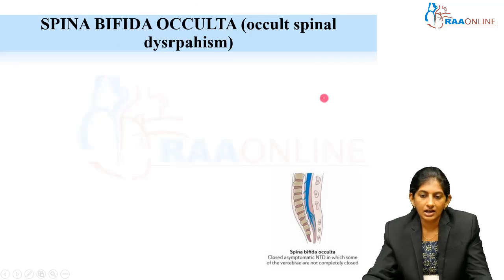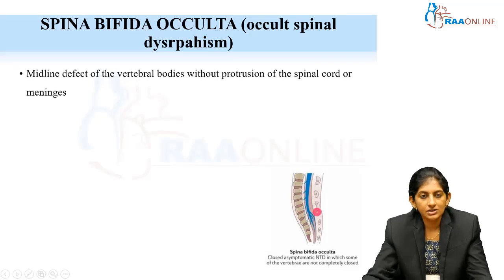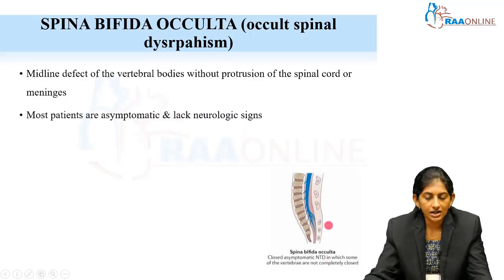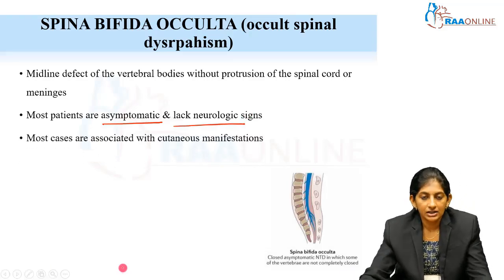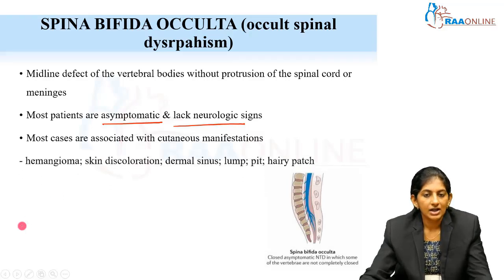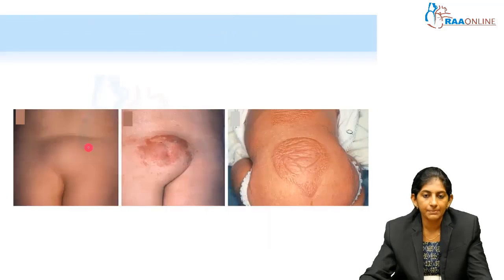In spina bifida occulta, only the vertebral defects are present and there is no communication with the outside world. Sometimes it is totally asymptomatic — randomly when we do an X-ray or neuroimaging we will find it. Most patients are asymptomatic and lack any neurological signs. When cutaneous manifestations are present, we can proceed to neuroimaging. There can be a hemangioma in the lumbosacral area, skin discoloration, a lump, or a hairy patch.